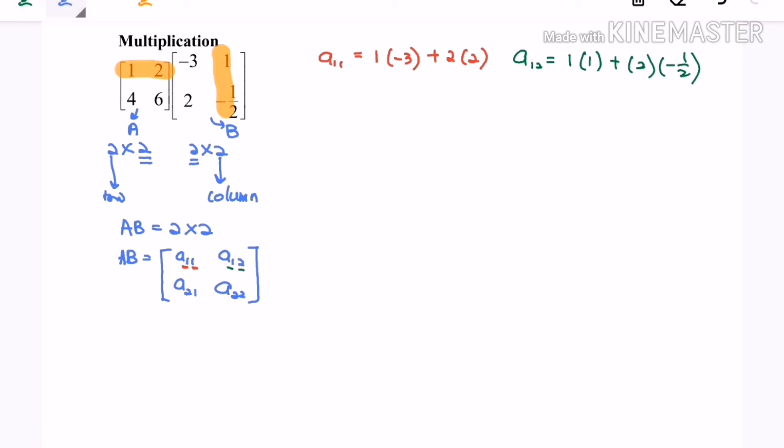Followed by A21. A21 means second row multiplied with the first column in matrix B. So A21 will equal 4 multiplied by negative 3 plus 6 multiplied by 2.